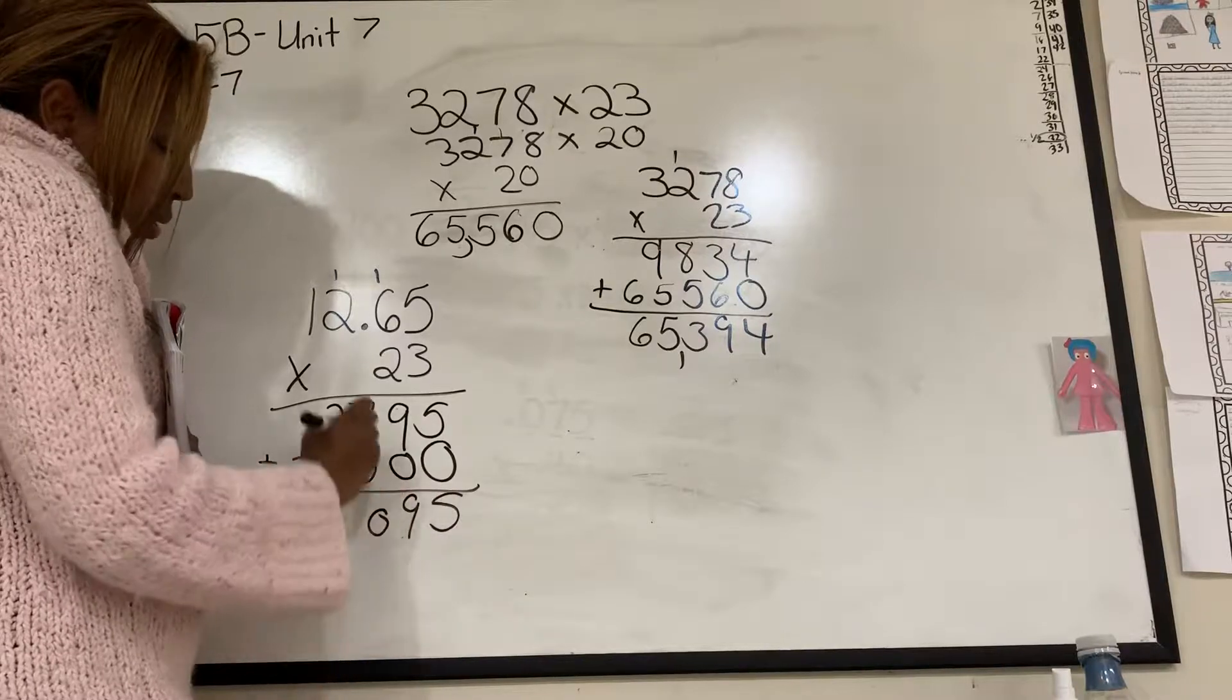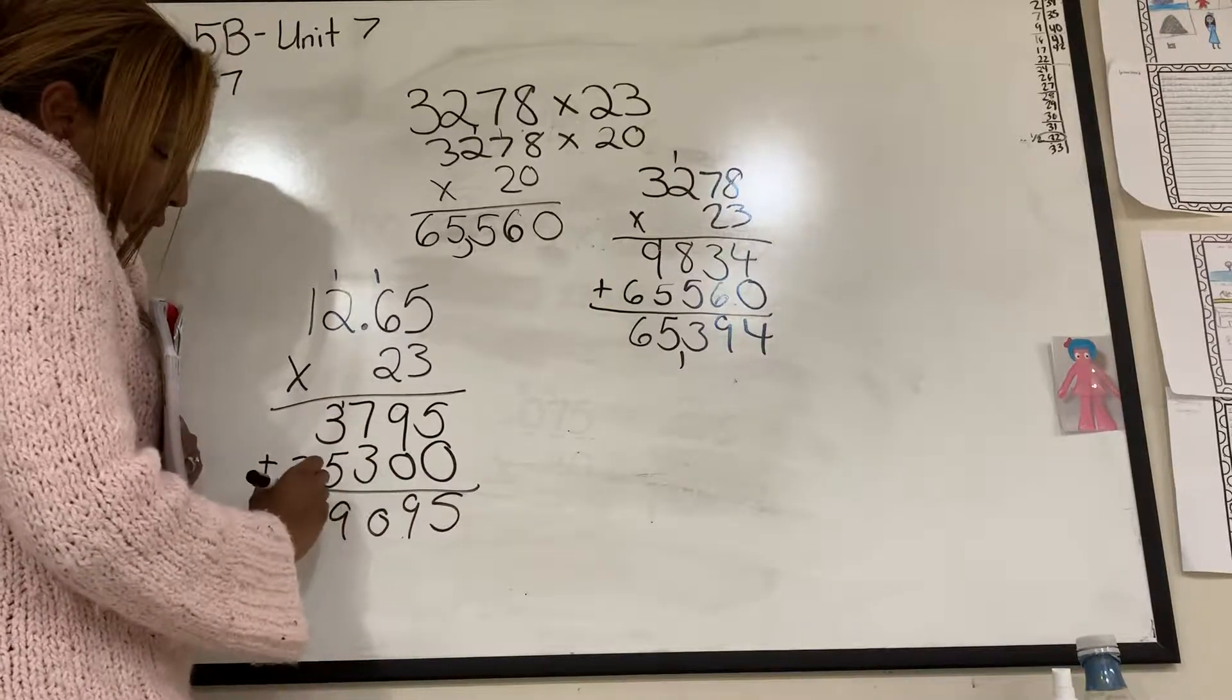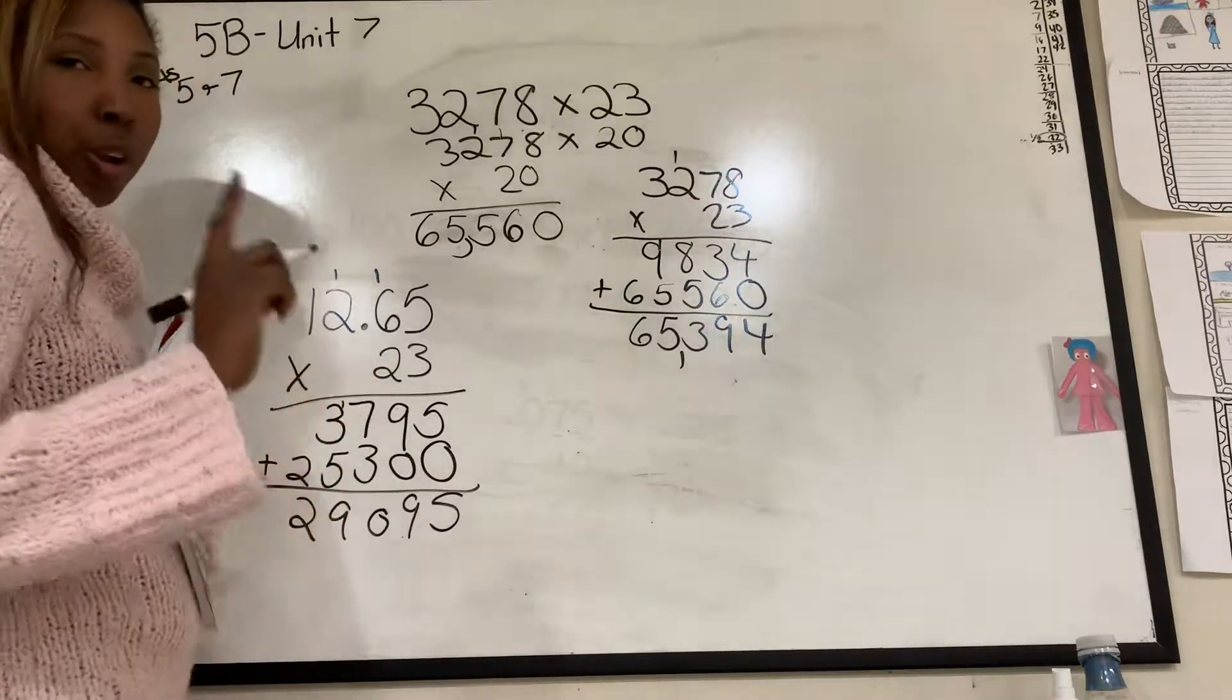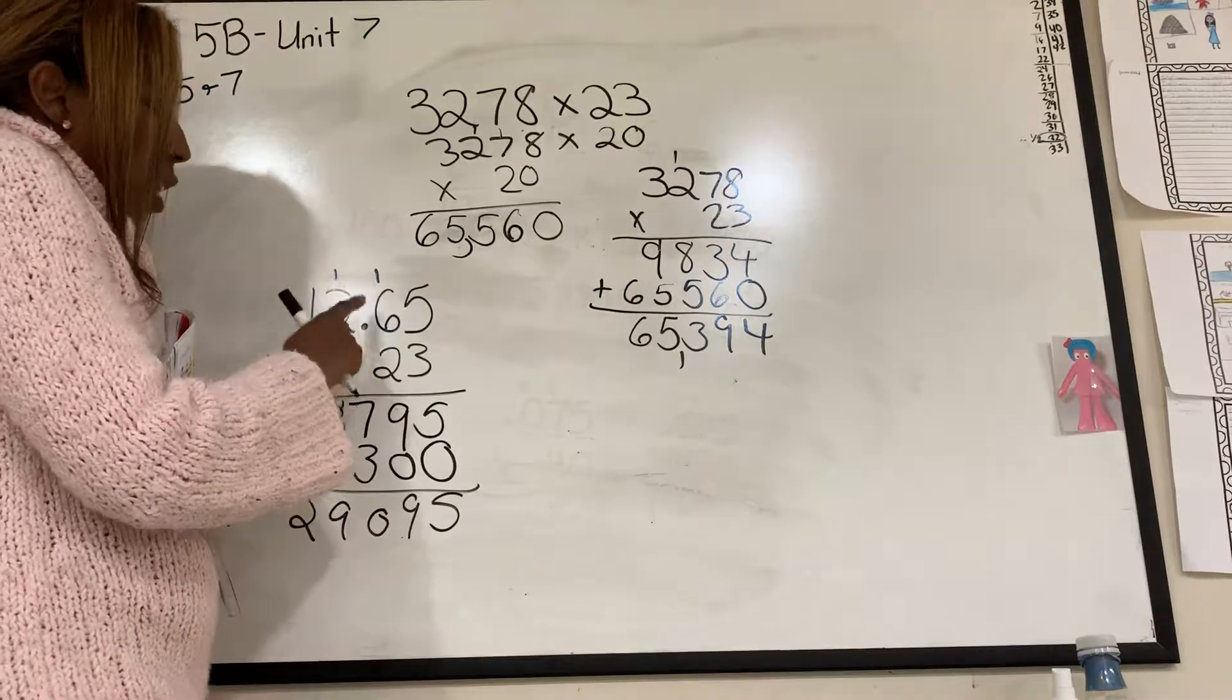I add it up. 5, 9, 0, 9, and 2. And I go, I'm done. Nope, because there's a decimal.